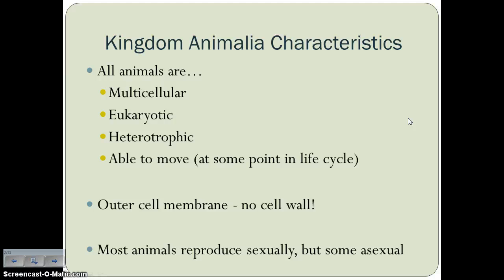So let's start by talking about what is an animal — why do these organisms belong to Kingdom Animalia? All animals are multicellular. They have eukaryotic cells, which means they have the type of cell that has a nucleus and membrane-bound organelles. All animals obtain their nutrition by consuming other organisms, which means they are heterotrophic. And all animals at some point in their life cycle have the ability to move.